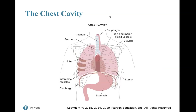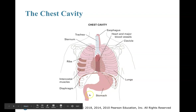Here's a picture of the chest cavity. We see the trachea in the front, behind the esophagus, the sternum — the bones are outlined — then there are the ribs, intercostal muscles, diaphragm, stomach, lungs, clavicle, heart and major blood vessels, and the esophagus behind the trachea. This gives you the basic anatomy of the thoracic cavity. The stomach is in the abdominal cavity but is shown just for reference.